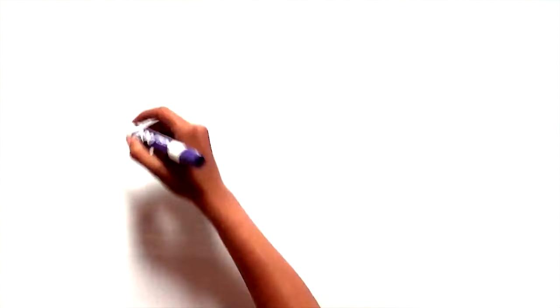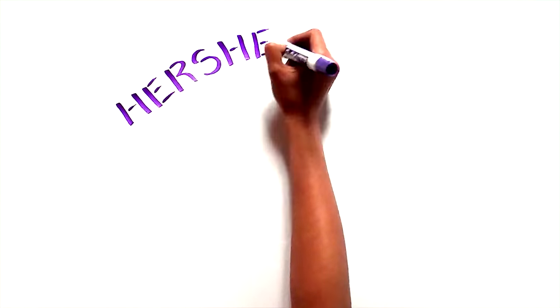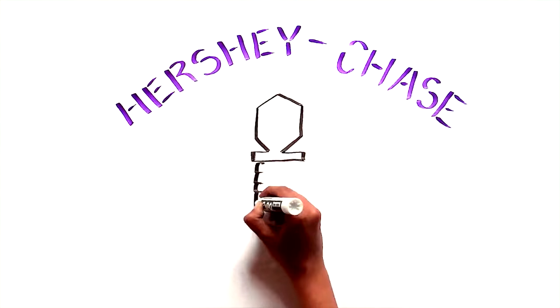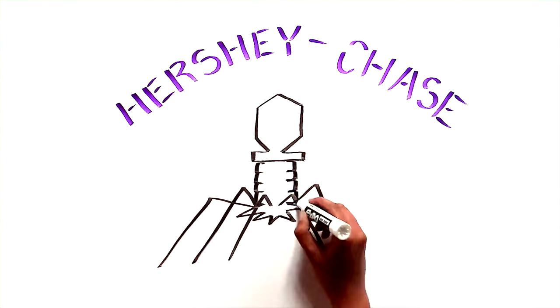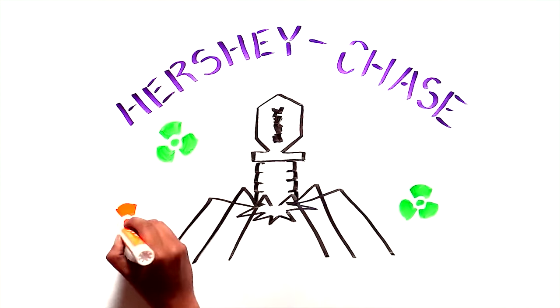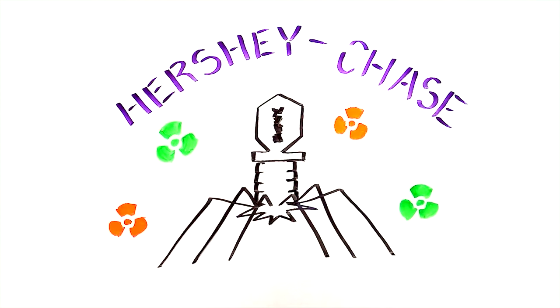The Hershey-Chase experiment is considered a classic in biology because it tackled an important question with the use of a well-chosen model organism and an elegant experimental design, in order to clearly distinguish between two competing hypotheses.